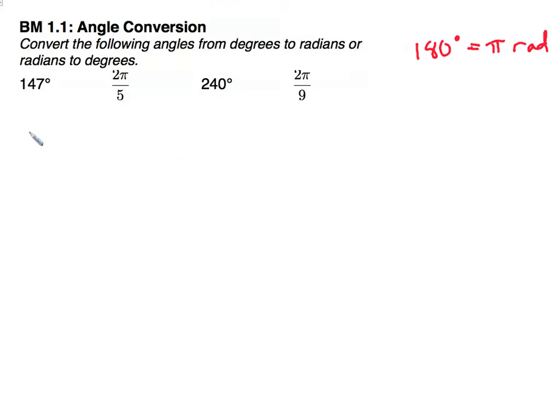So the first thing I'm going to do, 147 degrees - to get those degrees to cancel out, I'll use the ratio pi over 180. Degrees cancel, so I have 147 pi over 180. I can simplify that by 3, so I'll go ahead and do that: 49 pi over 60, and that's as far as I can simplify, so there's my answer.